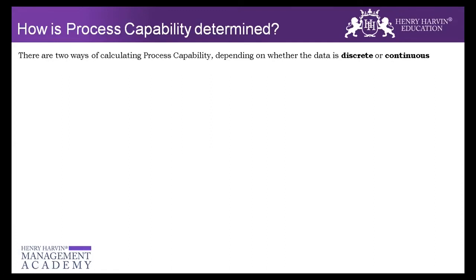Now we'll talk about process capability and how to calculate the measurement system analysis as well. Process capability for discrete data is different from process capability for continuous data, so that distinction needs to be very clear. We'll try to complete the discrete data portion today and then resume with continuous tomorrow.